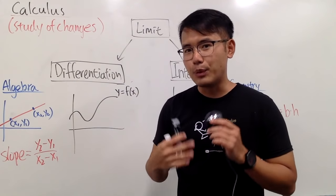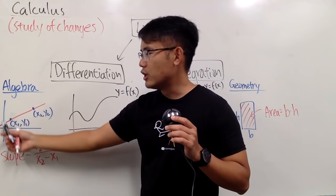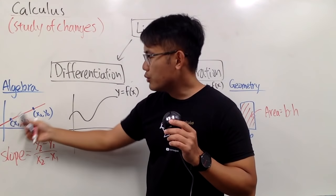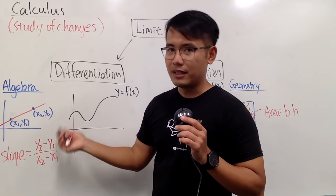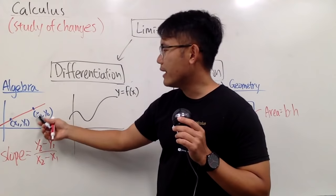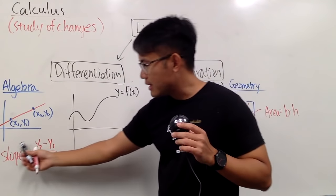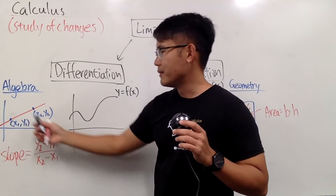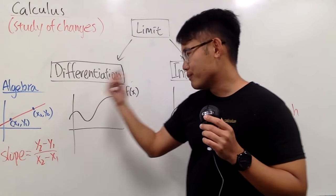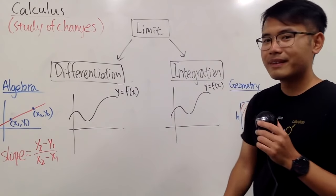One of the things that we used to do in algebra is to find the slope of a line. Given two points on the line — (x1, y1) and (x2, y2) — here is the slope formula for this line. I'm sure you guys have seen this many times in the past.